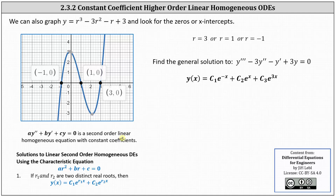When we had a second order linear homogeneous equation with constant coefficients, recall when we had two distinct real roots, the general solution was y of x equals c sub one times e to the power of r sub one times x plus c sub two times e to the power of r sub two times x. And because we have three distinct real roots, the general solution is y of x equals c sub one times e to the power of negative x, plus c sub two times e to the x, plus c sub three times e to the power of three x.